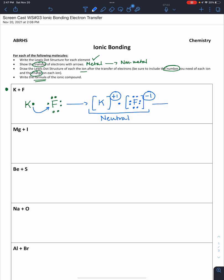We then draw the formula of the compound that is formed by listing the number of each atom using subscripts. Here we have one of each, so our formula is KF.